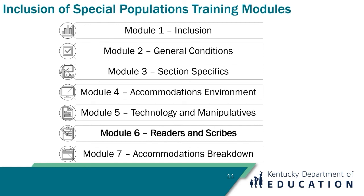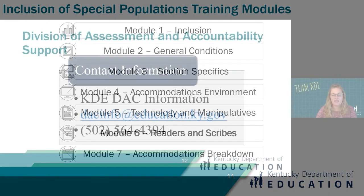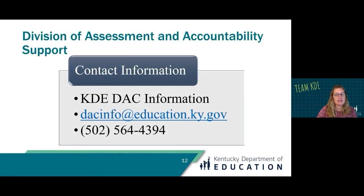This concludes Module 6 of 7 of the Inclusions of Special Populations training. Please review all seven modules to complete the training. If you have any questions about anything we discussed, please feel free to contact our office by emailing dakinfo@education.ky.gov or by calling 502-564-4394.